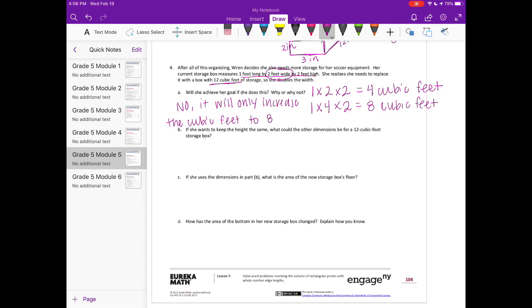Part B: If she wants to keep the height the same, what could the other dimensions be for a 12 cubic foot storage box? She wants to keep the height the same, which is 2 feet high. So what times what times 2 would be 12? There are many options. We know 2 times 6 is 12, so you could do 6 by 1 by 2. That's equal to 12. If you want to break it up, you can do 2 by 3 by 2, that's equal to 12. You can mix it around and do 3 by 2 by 2. Remember, this height is always staying the same. Or another option would be 1 by 6 by 2.